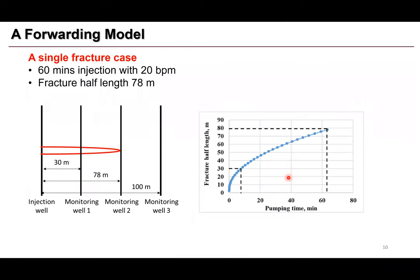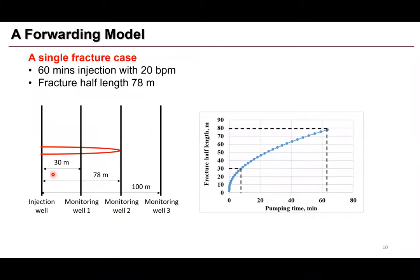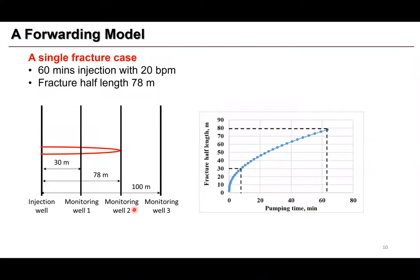Now I want to show the mechanism of strain rate based on our forward model. We start with a simple single fracture case. This is the injection well; using our fracture propagation model, we simulate a fracture with a length of 78 meters. We place three monitor wells: monitor well 1 at 30 meters away, monitor well 2 right at the tip of the hydraulic fracture, and monitor well 3 at 100 meters away. The fracture hits monitor well 1 in less than 10 minutes and reaches monitor well 2 at about 6 minutes.